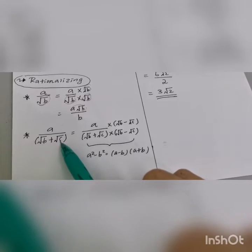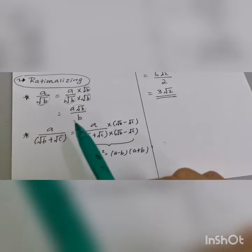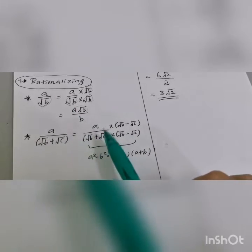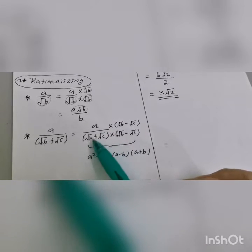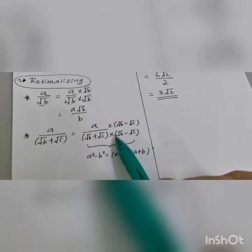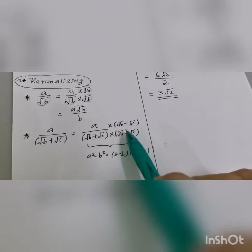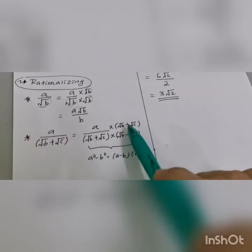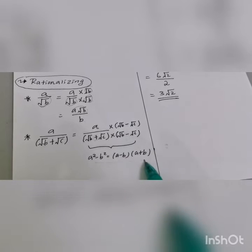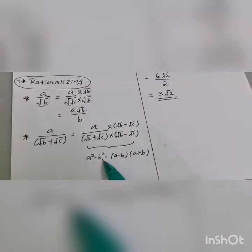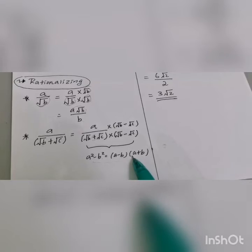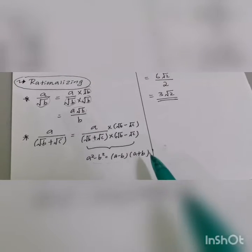If the denominator has two terms like square root of b plus square root of c, we need to rationalize it also. If the denominator has a plus, we multiply by the negative version; if negative, we multiply by the positive. We use the concept: a squared minus b squared equals (a minus b)(a plus b).